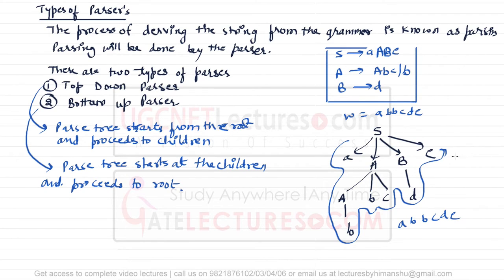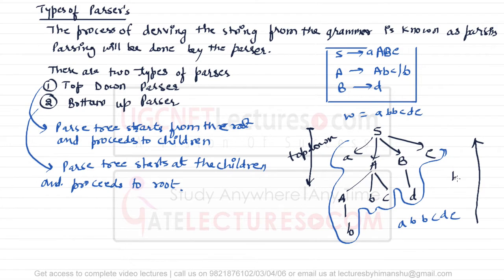The top-down parser tries to generate from the top to the end — that means from the root to the children. The bottom-up parser starts from the bottom and goes to the top, meaning given the string, we try to go back to the previous state — for example, from B, how to get back to A, and from A, how to go back to the previous production.